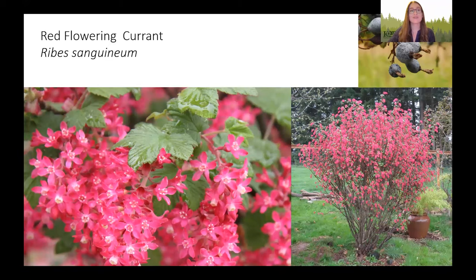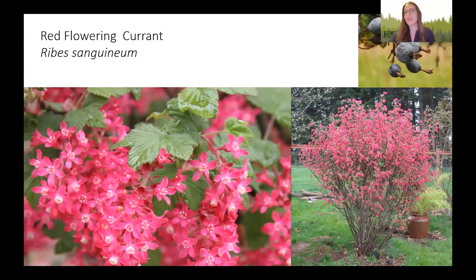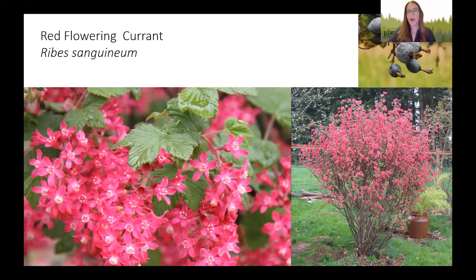Next is another one of my favorites — red flowering currant. It likes sun to partial shade and dry to moist, well-drained soils. The flowers are really beautiful, bright pink, and attract pollinators — especially hummingbirds. If you have this in your garden, you might see hummingbirds more often. The berries are edible but pretty unpalatable — seedy and kind of gritty — though wildlife really does enjoy those berries. This is definitely one of our showier native species.